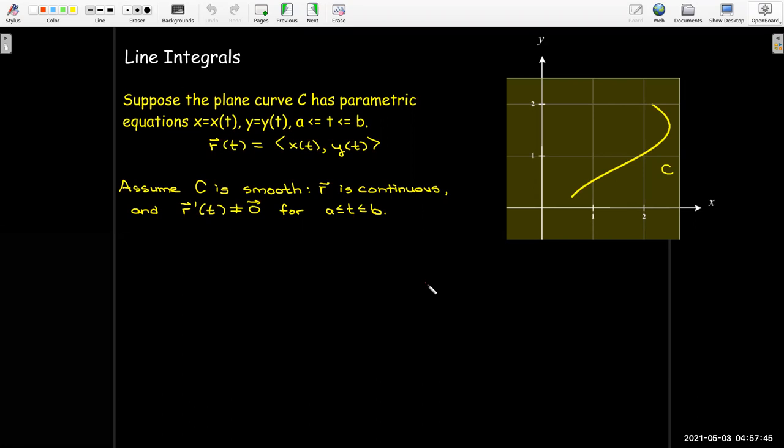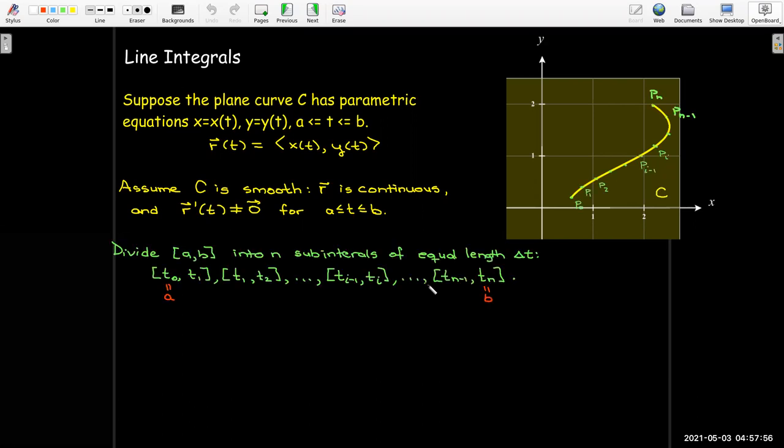Just like we did in calculus one, where we had an interval on the x-axis from a to b, here we have an interval for our parameter t that goes from a to b. We're going to break that up into n equal subintervals, and then in each subinterval, we'll choose a sample value. p sub 0 is the image of t sub 0, which is just going to be a, and so on.